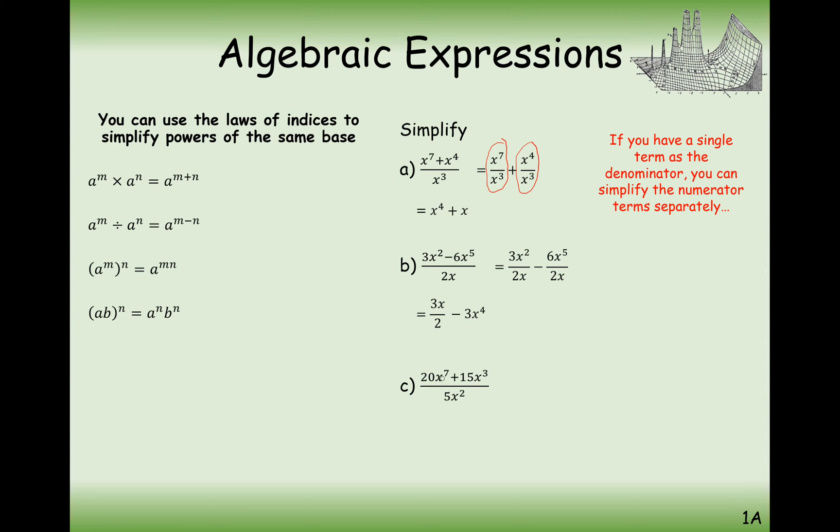And working with exactly the same type of question here, we're going to split up the fraction into the numerators with the same denominator on the bottom. And then simplify using our rules of algebra. So it's going to be 4 from 20 divided by 5. X to the power of 5 from x7 divided by x squared. And we use the subtraction rule there. And then it's going to be 3 from the 15 divided by 3. And x from the x cubed divided by x squared. The 3 take away the 2. So this is your final answer here.